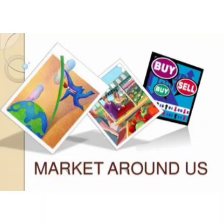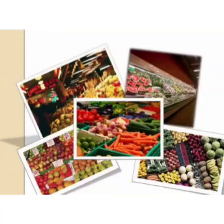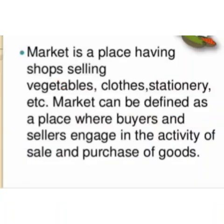Let's begin the chapter Markets Around Us. As you must be aware of the term market — a market is a place where buyers and sellers meet to exchange goods and services in return for money. A market is also a link between a producer and a consumer. The people engaged in production of goods and services are known as producers, and the people who purchase goods and services for consumption are known as consumers.